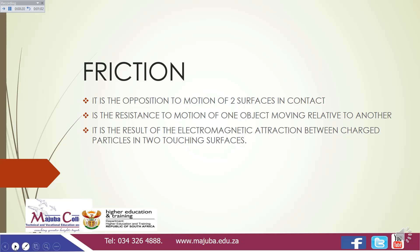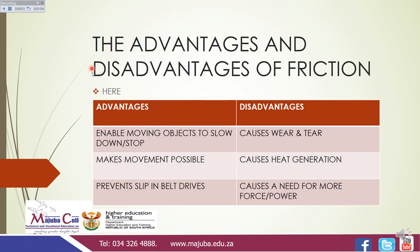Let's look at the advantages and disadvantages of friction in engineering. Friction enables moving objects to slow down or stop. It also makes movement possible and prevents slips in belt drives. For the disadvantages, friction causes wear and tear, heat generation, and a need for more force and more power.